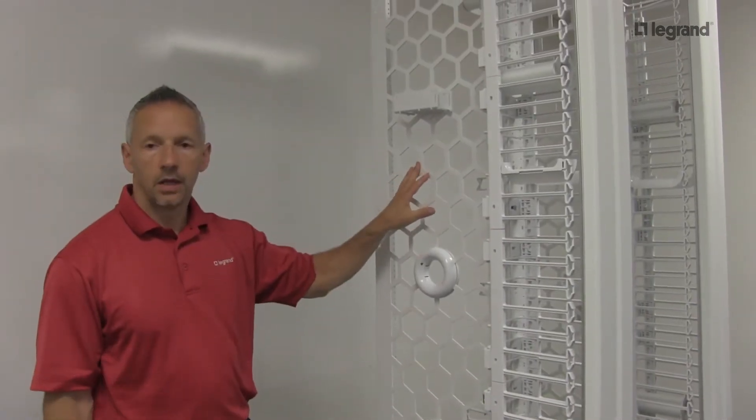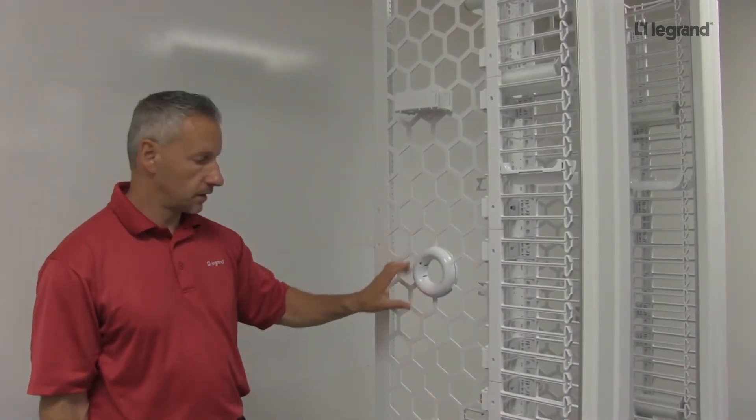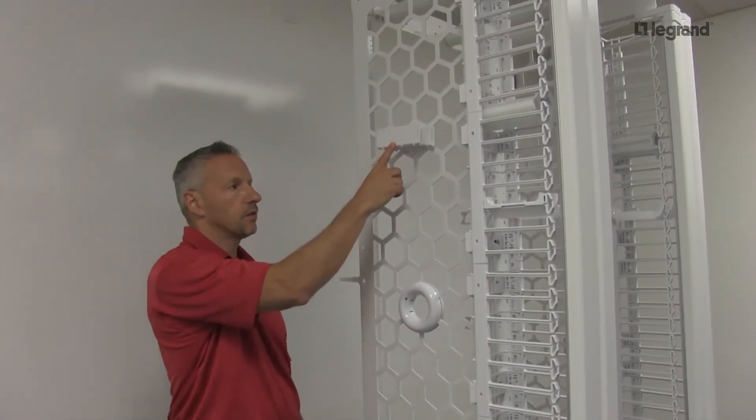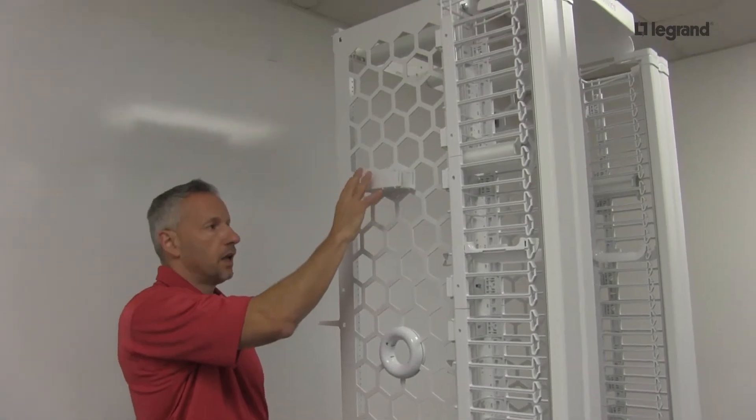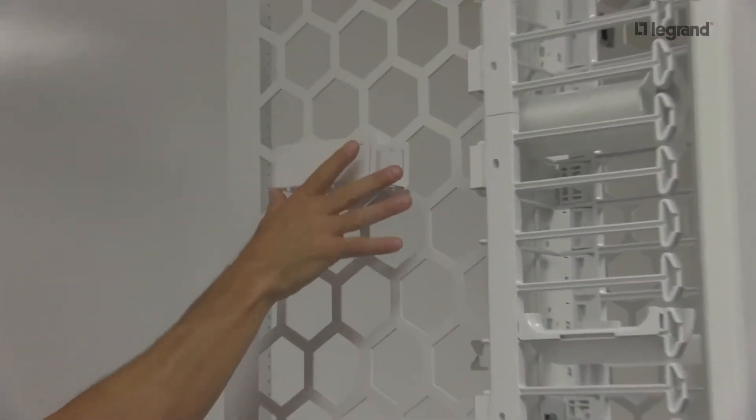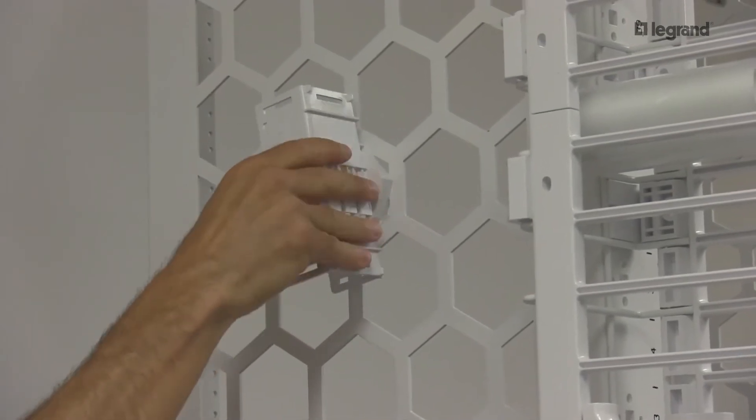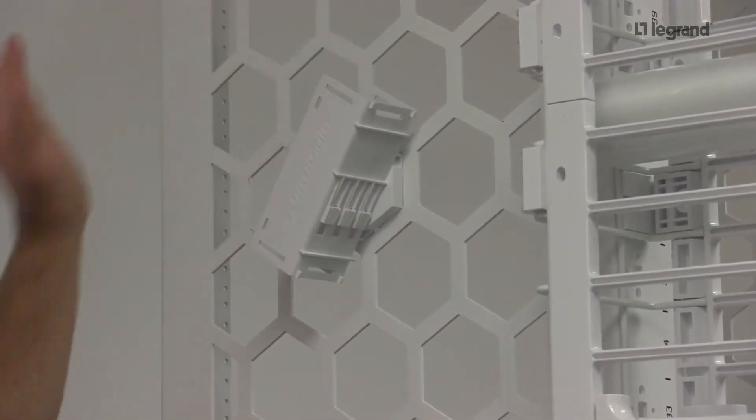The hex pattern also lends itself to accessories that snap into it. This is a universal cable trough, which allows you to build a fiber troughway on the side of the Mighty Mode 20. You can twist this in infinite locations to route fiber in any direction you want.